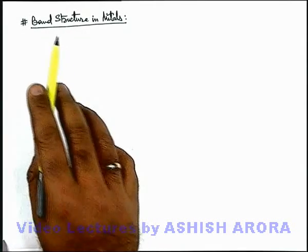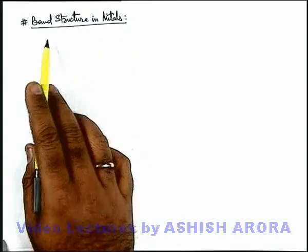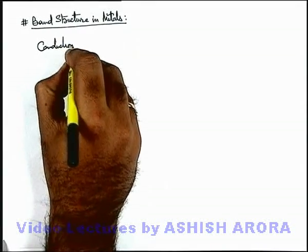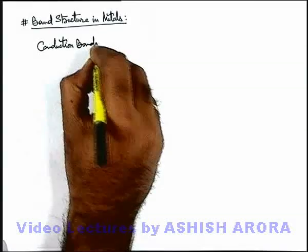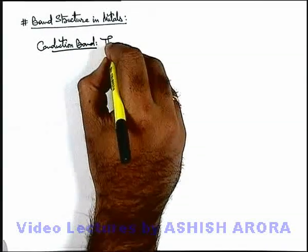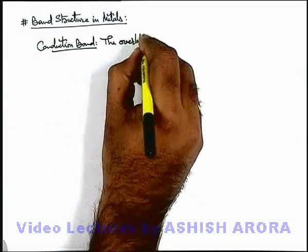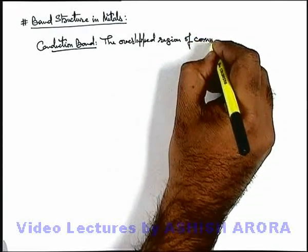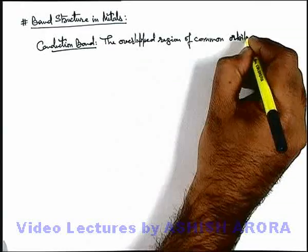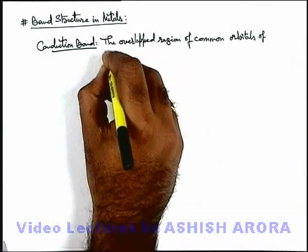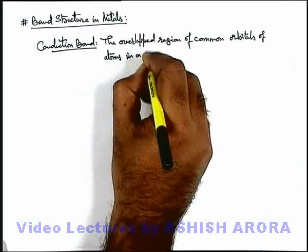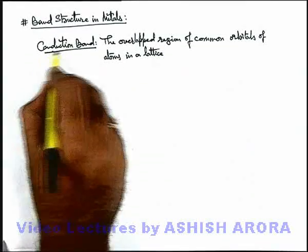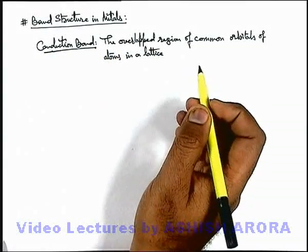Let us discuss band structure in metals. As we already studied about the conduction band in previous articles, the conduction band is the overlapped region of common orbitals of atoms in a lattice structure. All those electrons which exist in the conduction band can conduct electricity, as these are free to move in the whole lattice structure.